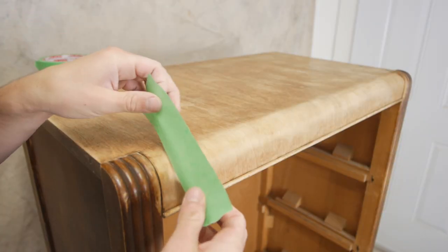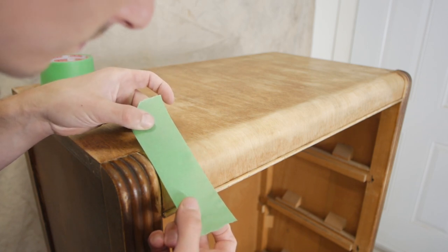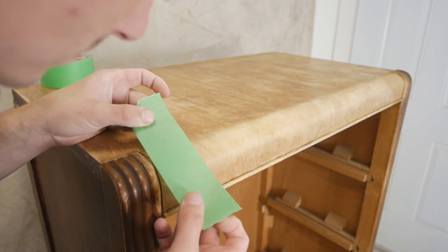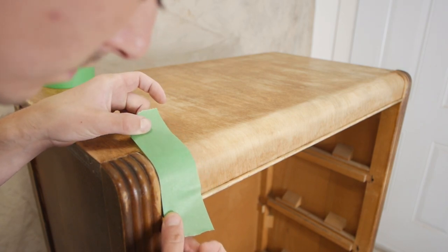Now I'm using some painters tape. I'm just going to tape around the edges where I don't want the black paint to get on. Since I'm staining the top, I'm taping around these edges here.